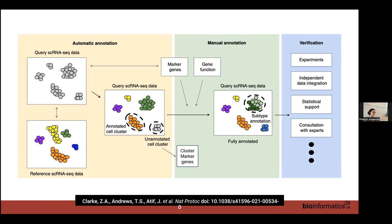Integration can take trial and error — sometimes three or four tries with different methods — to get a good integration. Once you have your automatically annotated cells, you do manual annotation to check that automatic annotation worked, because some methods will always assign a cell type even if cells don't look like anything in the reference, using a best guess that's often wrong. Usually you use marker genes from the literature or from databases to verify.